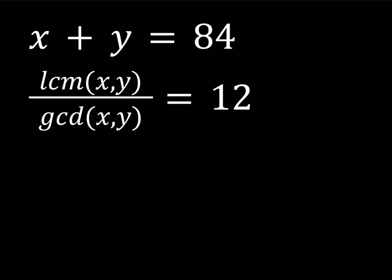Hello everyone. In this video we're going to be solving a system of equations. We have x plus y equals 84 and the ratio LCM to GCD equals 12. Let's review what these mean. LCM stands for the least common multiple of x and y, and GCD stands for the greatest common divisor of x and y. We're given the ratio of the LCM and GCD, the sum of the two numbers, and we're supposed to solve for x and y which are positive integers.